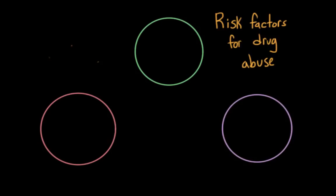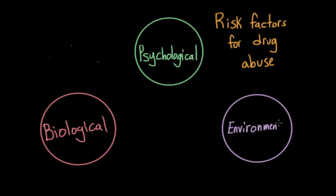So things that seem to correlate with substance abuse later in life. And we're going to talk about biological risk factors, psychological risk factors, and socio-cultural and environmental risk factors. Let's start off with the biological factors.